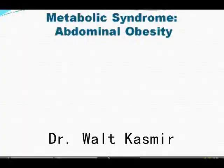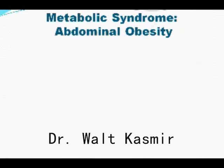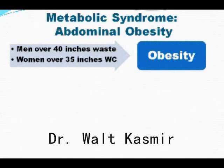Metabolic syndrome has six components. Abdominal obesity is the third component. Abdominal obesity, otherwise known as visceral obesity, can be measured very simply. The first method is measuring the waist — if the waist circumference (WC) is greater than 40 inches in men or 35 inches in women, this is a measure of obesity.